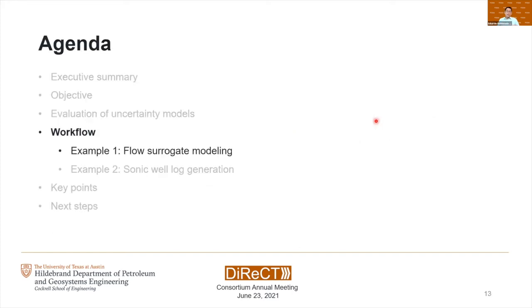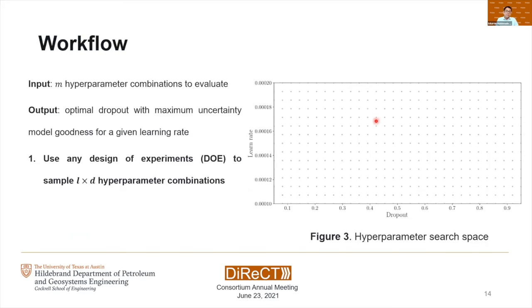Now I will present the workflow. In this first example, we train a flow surrogate model where we are primarily interested in capturing the spatial uncertainty in subsurface fluid saturation changes for a two-phase displacement problem. Using the concepts just described for checking uncertainty models, we propose the following workflow. First, we define M hyperparameter combinations to evaluate, using any design of experiments to define the search space. In figure three, we show only two hyperparameters as an example to plot in 2D space.